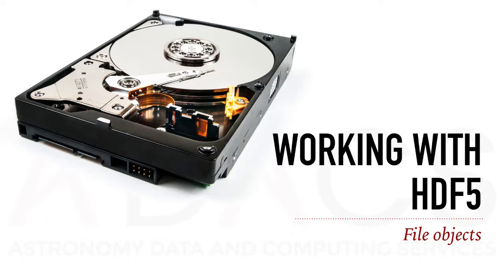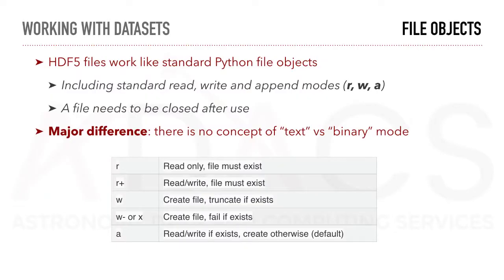In this section, we will look at how to deal with HDF5 files using Python examples. HDF5 files work like standard Python file objects — they include standard read, write, and append modes marked by R, W, and A, and need to be closed after use. One major difference is that they cannot be wrapped inside a with block for automatic closure. Another major difference is that there is no concept of text versus binary mode.